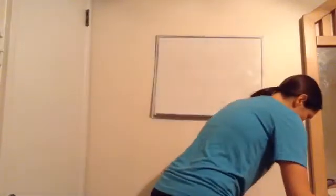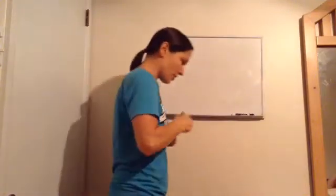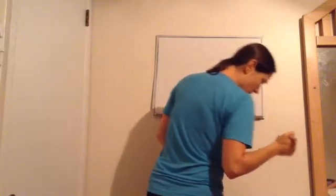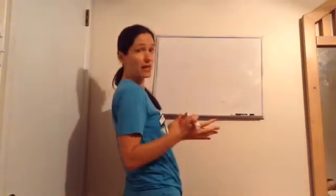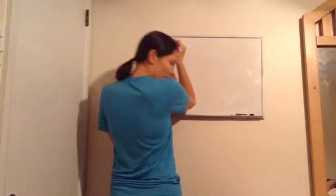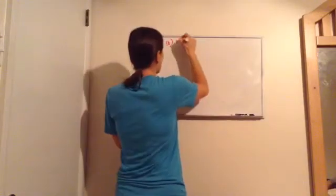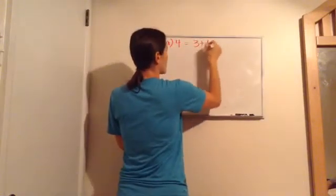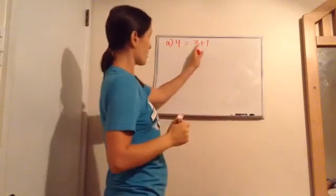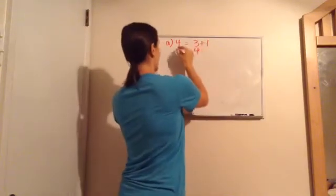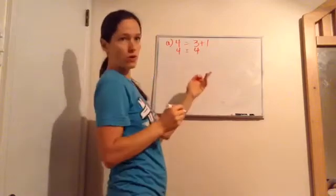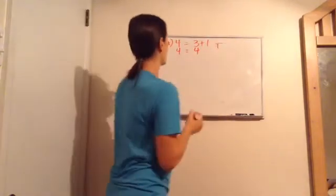Now, the third part of the lesson is on conditional equations. So, I'm going to put five equations up here, and we're going to decide if they're true or false. A, four equals three plus one. Three plus one is four, and four is four. Does four equal four? Yes. I'm going to put T for true.